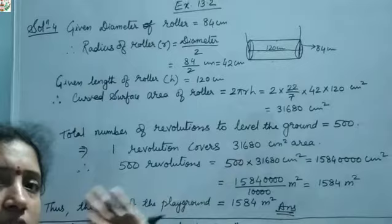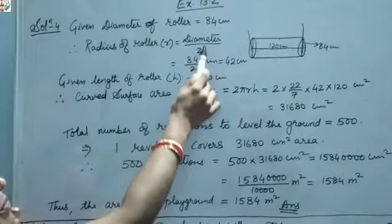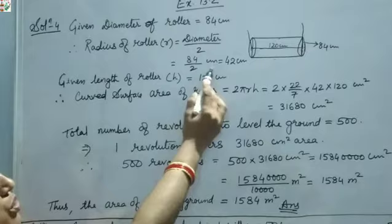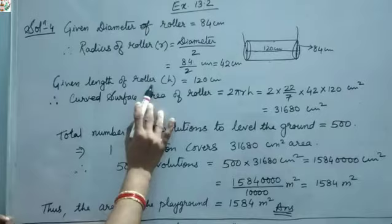Given: diameter of the roller is 84 cm. So radius equals diameter divided by 2, that is 84 upon 2, which equals 42 cm. Height of the roller is also given — the length of the roller is 120 cm.